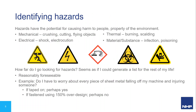A hazard can be anything associated with the machine that has the potential to cause harm, and the types of hazards will differ depending on what the machine does. Mechanical hazards could be crushing, cutting or impact. Electrical hazards like shock or electrocution. Thermal hazards like burning or scalding, or hazards associated with materials handled — is it infectious, poisonous, radioactive? As part of any good risk assessment, you care most about what is reasonably foreseeable.